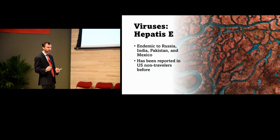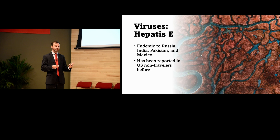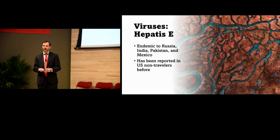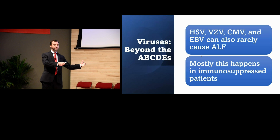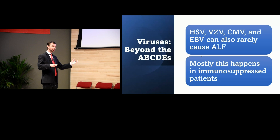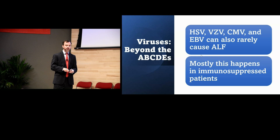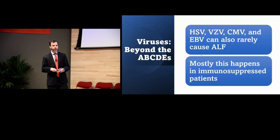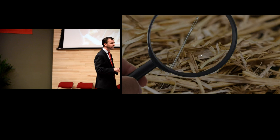Hepatitis E is not endemic in the U.S. but is endemic in Russia, India, Pakistan, and Mexico. There have been rare case reports of U.S. non-travelers developing hep E. Beyond A, B, C, D, and E, other viruses can cause hepatic failure — particularly HSV, VZV, CMV, and EBV — typically in immunosuppressed patients on chemotherapy or otherwise immunocompromised.